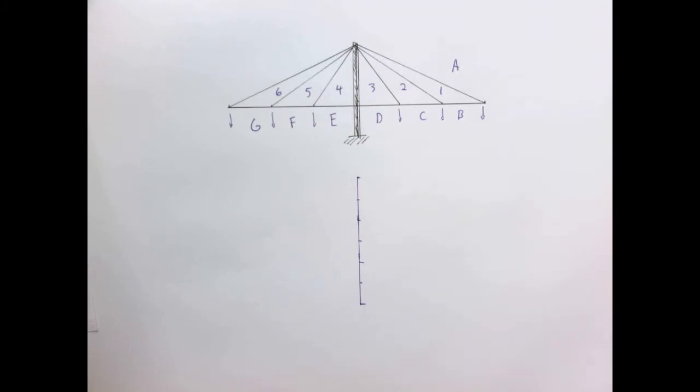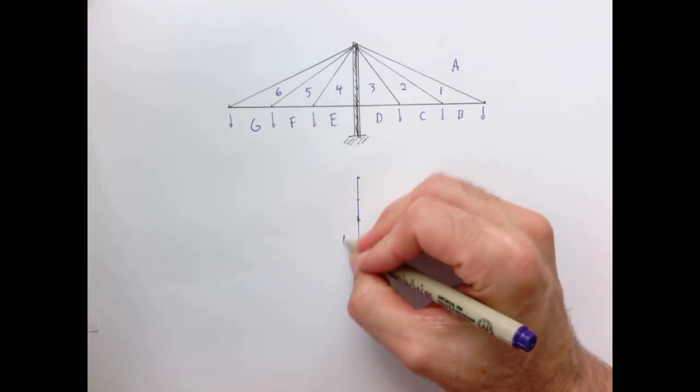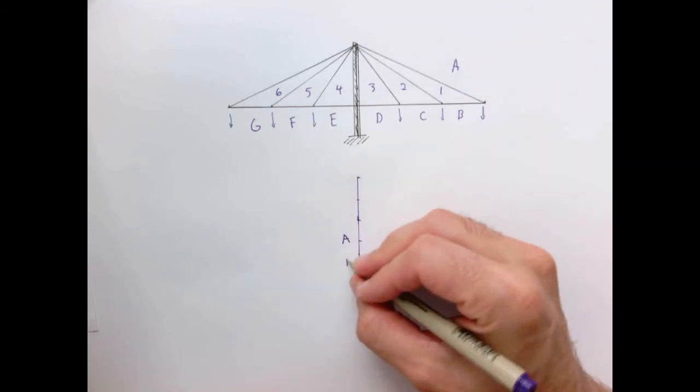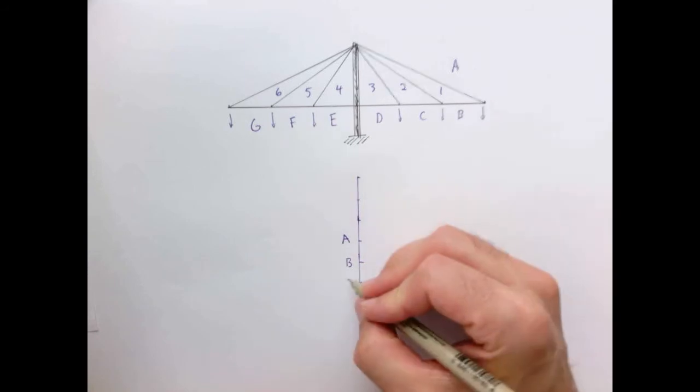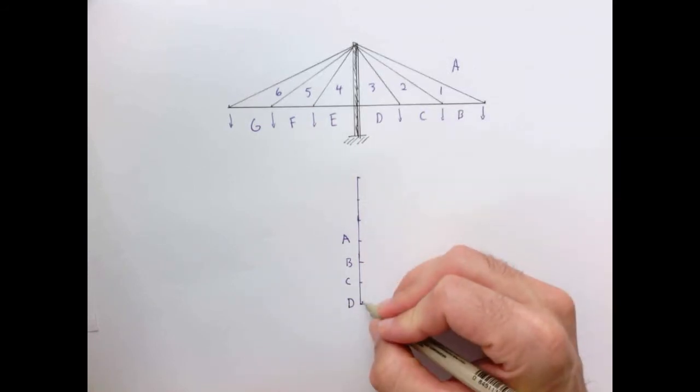So this will be my load line. So in the middle I'm going to put point A. A to B we go down one unit. B to C we go down one unit. C to D we go down one unit.